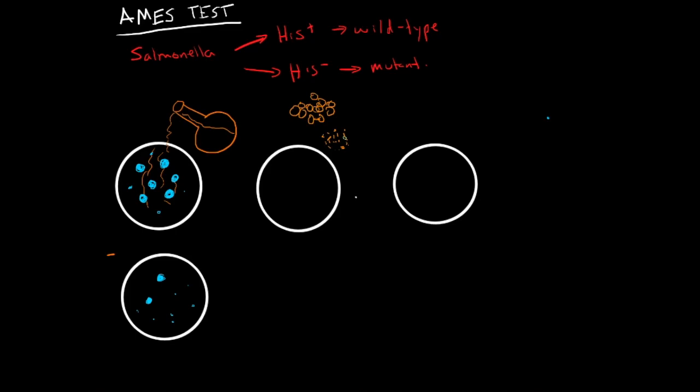And then he'd have his test compound, so this liquid here that he's testing to see if it's a mutagen, and then he would put it, he'd mix these two things together. So mix these two things together, put it into this petri dish.